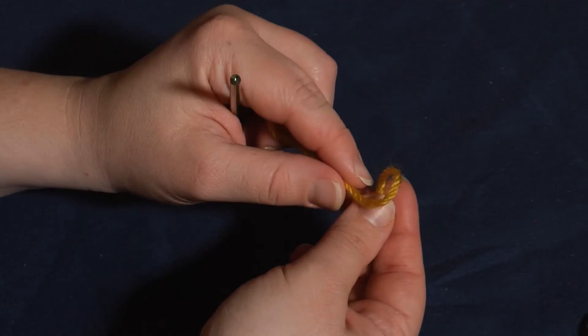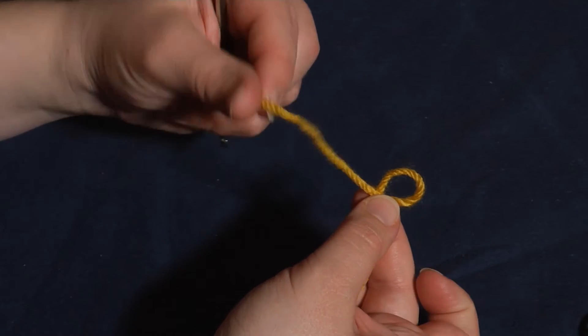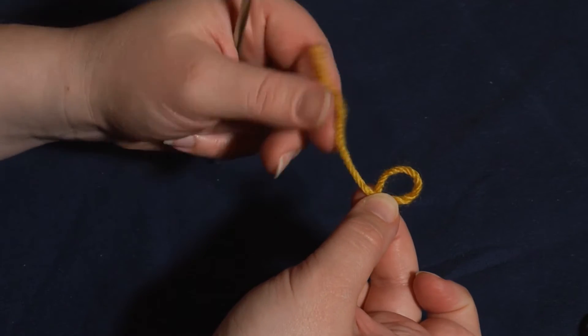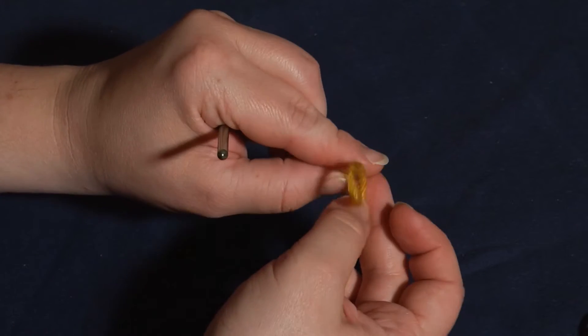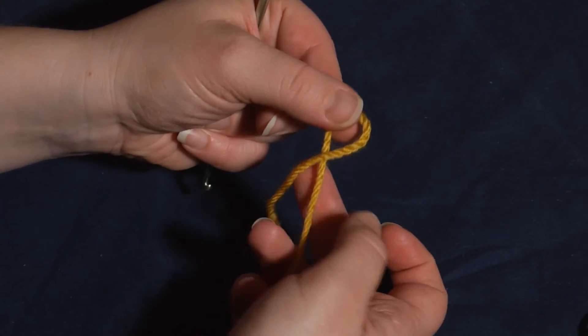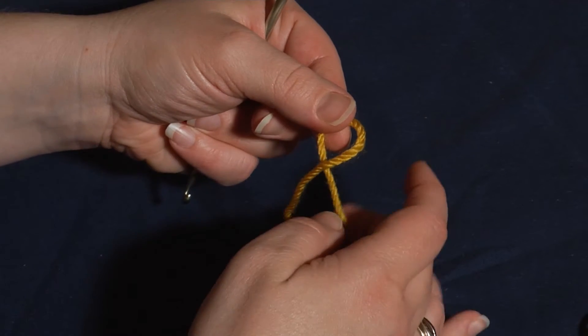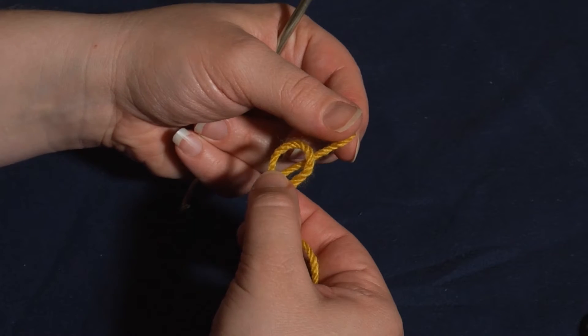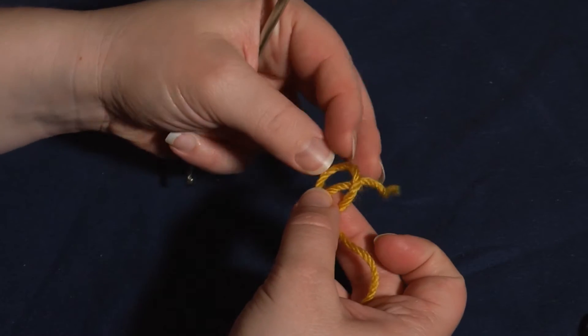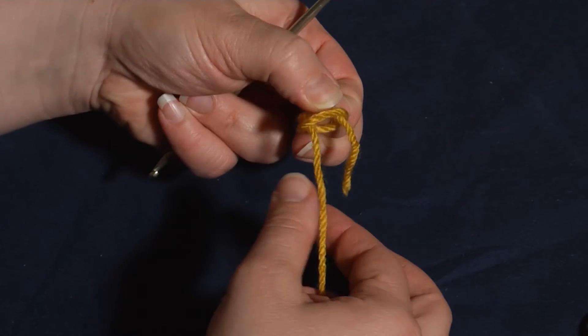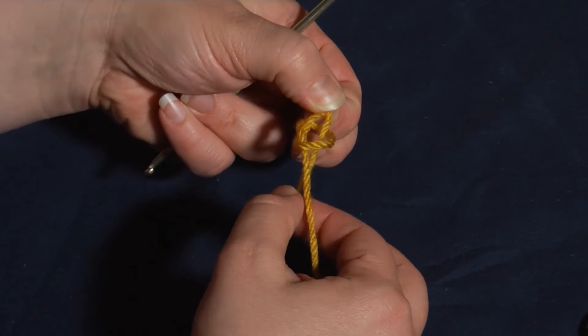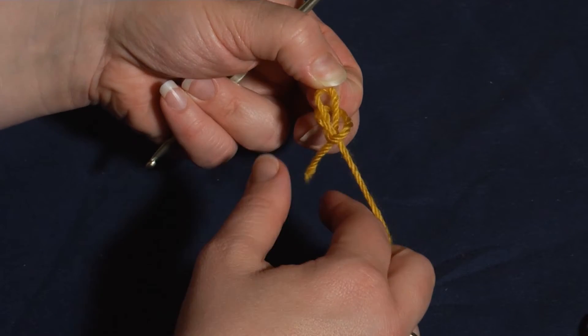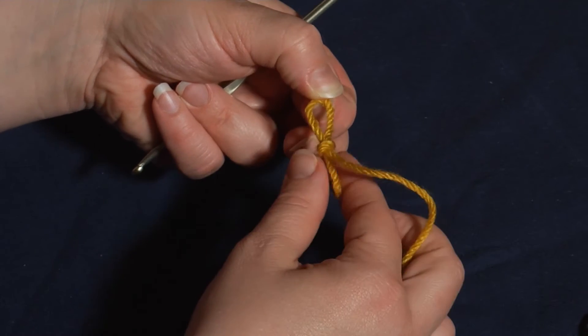First, you wrap the short piece of yarn, the working end, in a loop over the skein end. Then, you pull this short end behind the loop, and push it through the loop. Don't pull it all the way through, keep the ends out, and pull up, and you've got a slipknot.